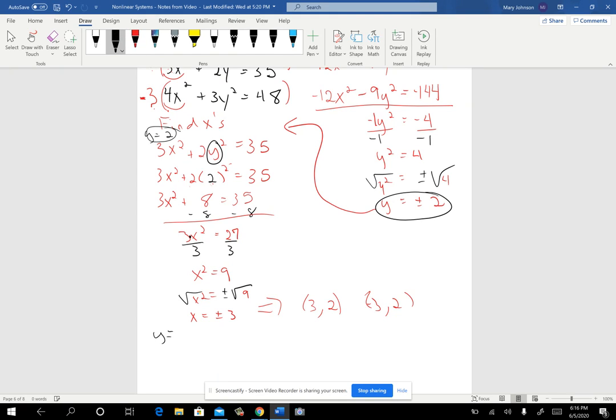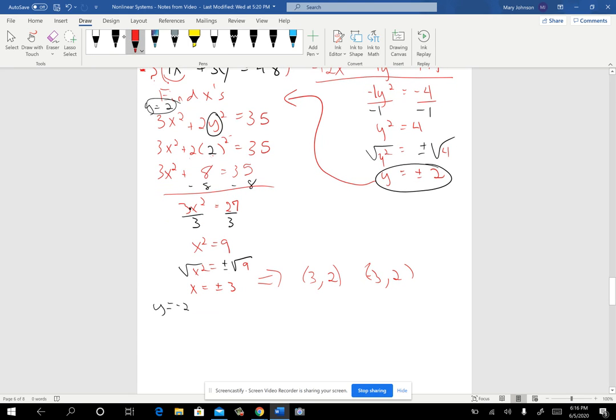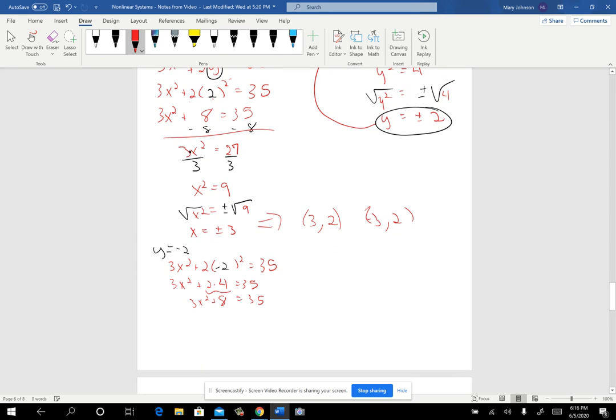If I were to do that, I'd get 3x squared plus 2. But then right there, I'm putting a negative 2 this time. All right. So when I do that, I get 3x squared plus 2 times positive 4 again, which gives me an 8 again. And so from here to the end, I don't really need to write all those steps again. I know it's going to work out just like before. And I'll get x could be positive or negative 3. So that is when y is negative 2, x could be 3. When y is negative 2, x could be negative 3. So you actually have these four ordered pairs that would turn out to be the solutions to that system.